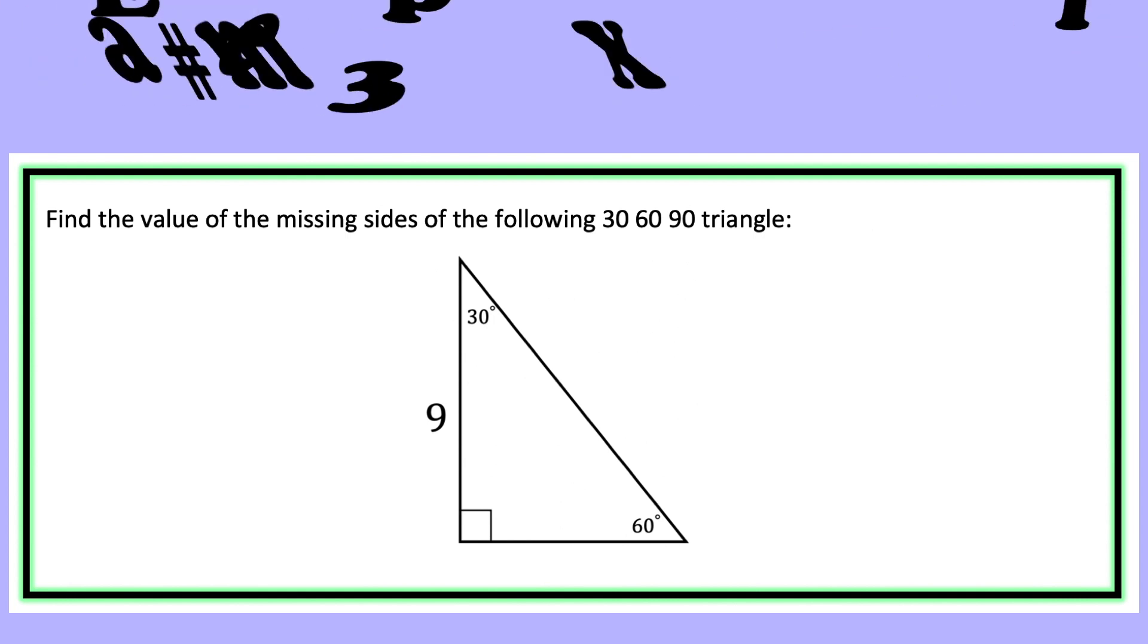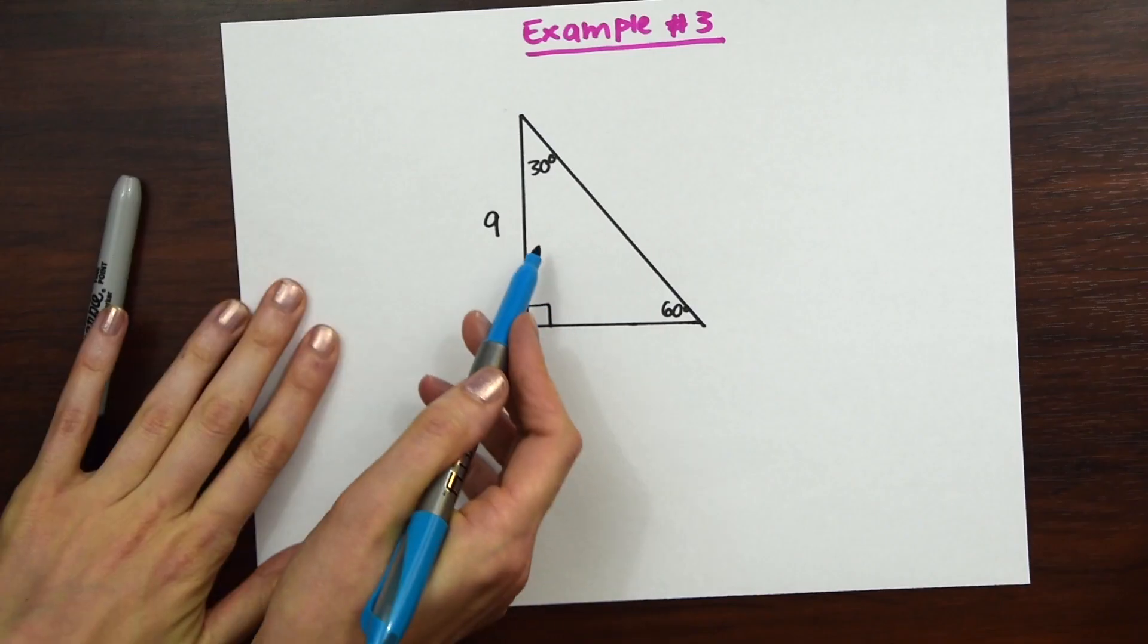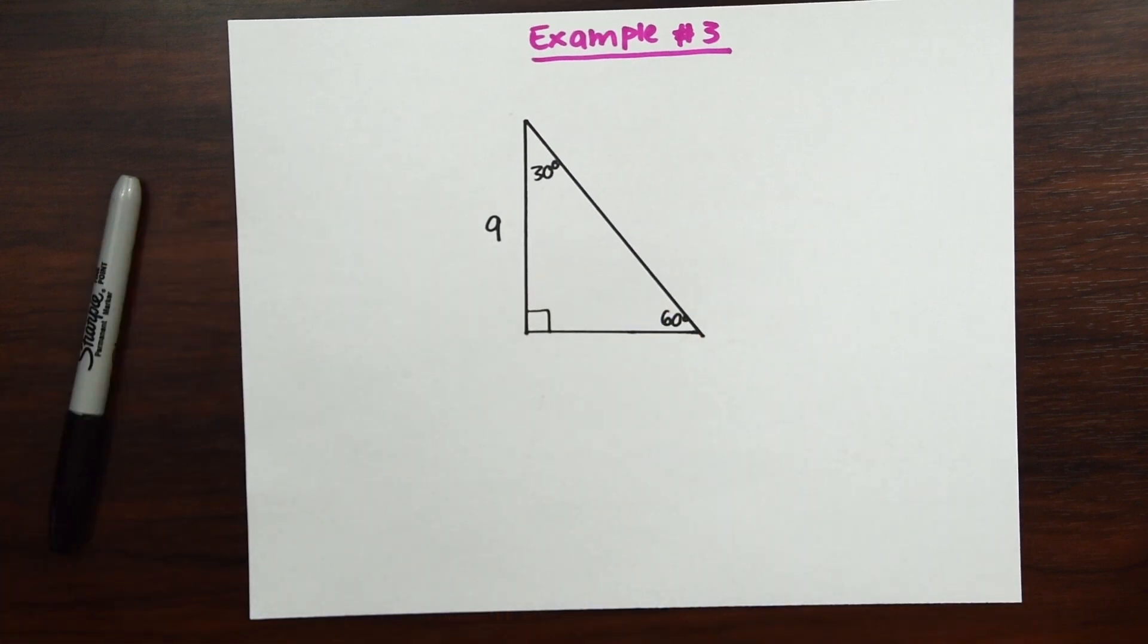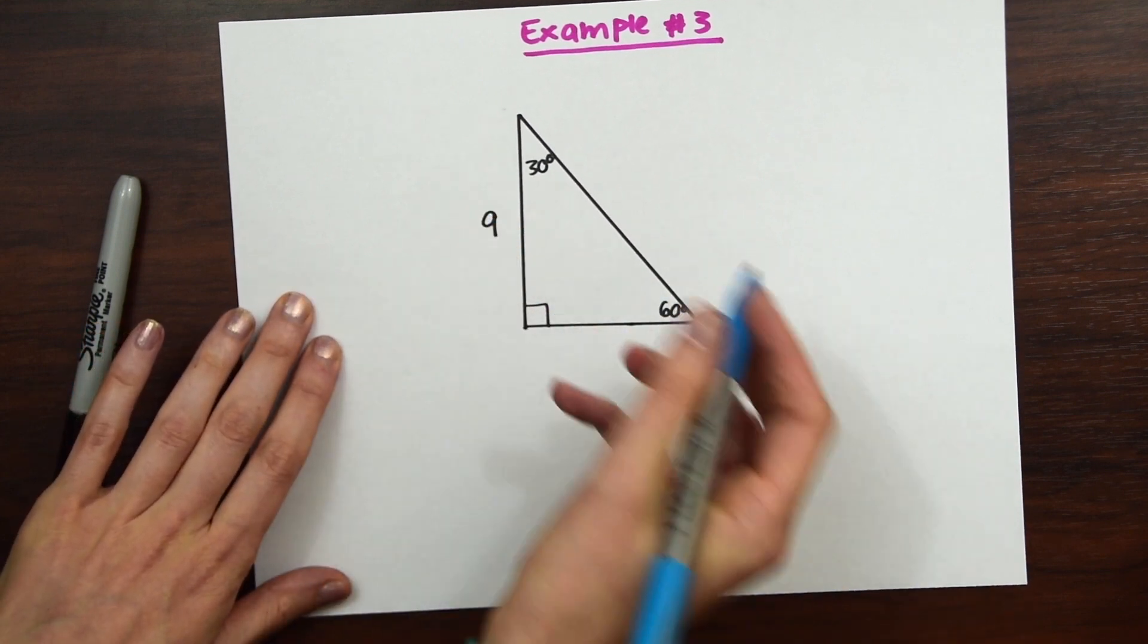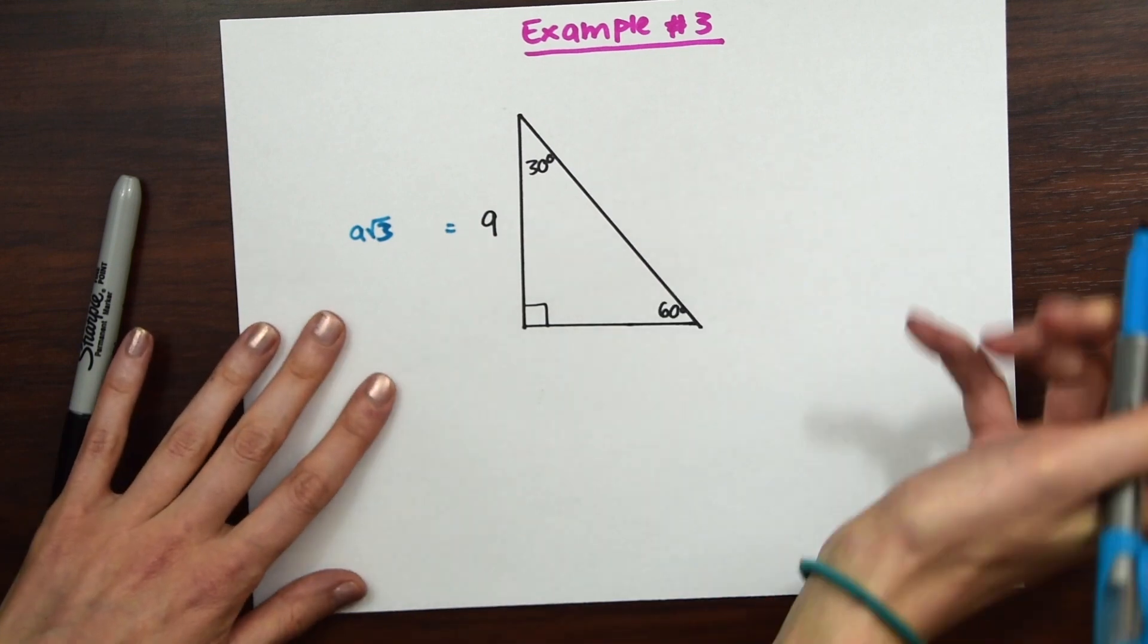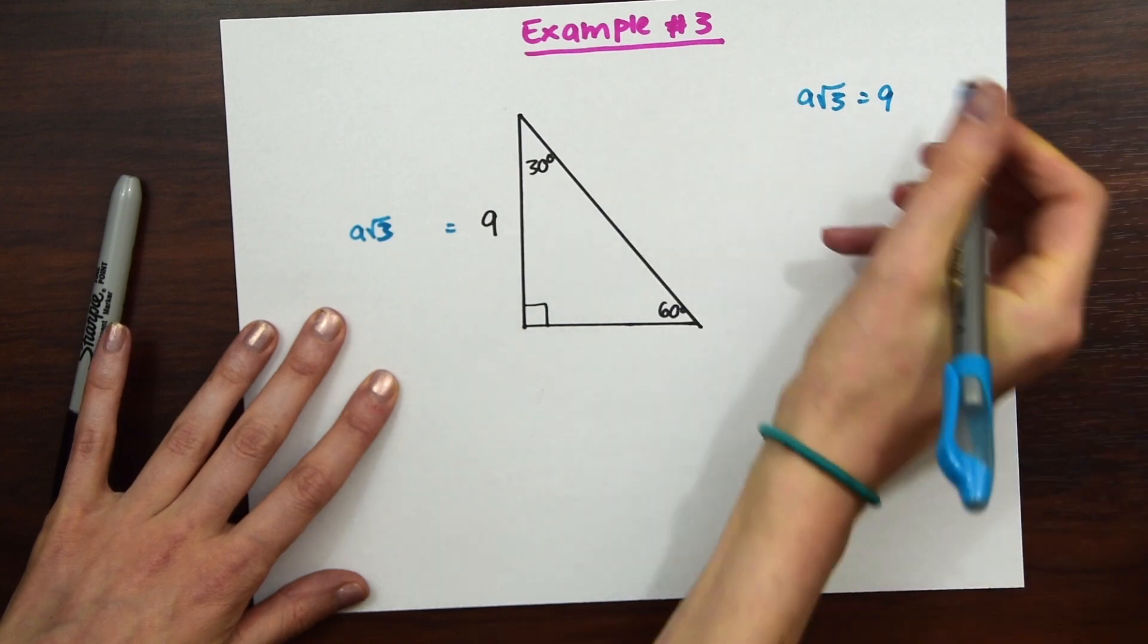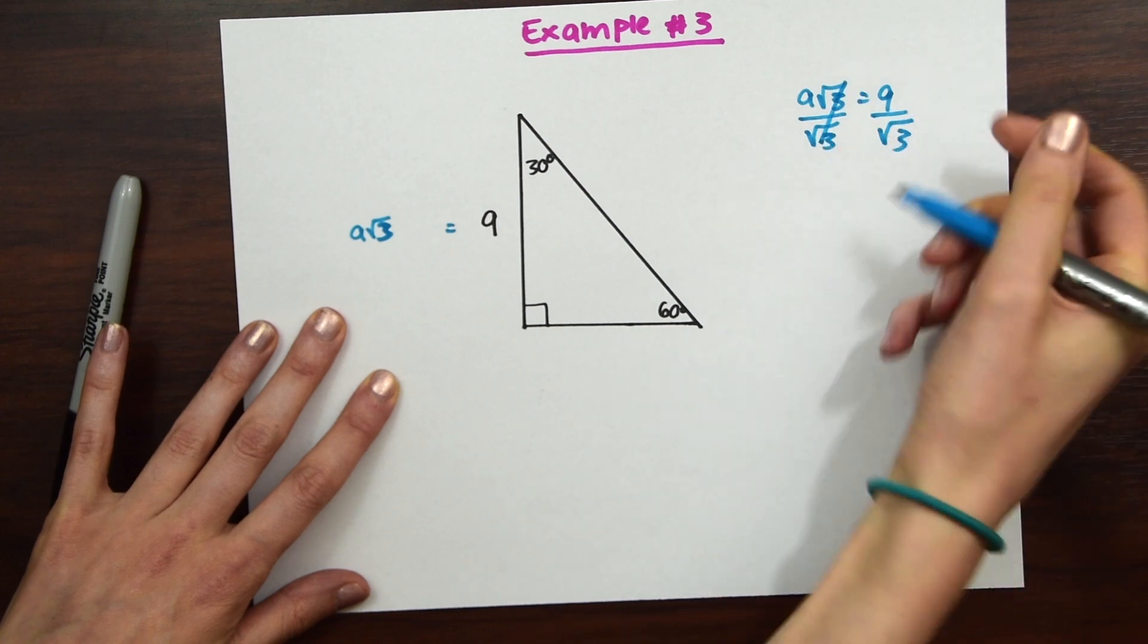Now for the last example we have here, this time we're given the value across from that 60 degree angle. So notice, be careful because sometimes you're going to have different triangles that are faced different ways. So just be careful of that. So we know that 60 degrees is across from this length that we're given. So we know that this is going to be equal to A rad 3. So we don't know the value of this A. So why don't we bring this equation over here. So we have A rad 3 equals 9, and we have to solve for A. So to do that, we're just going to divide rad 3 on both sides.